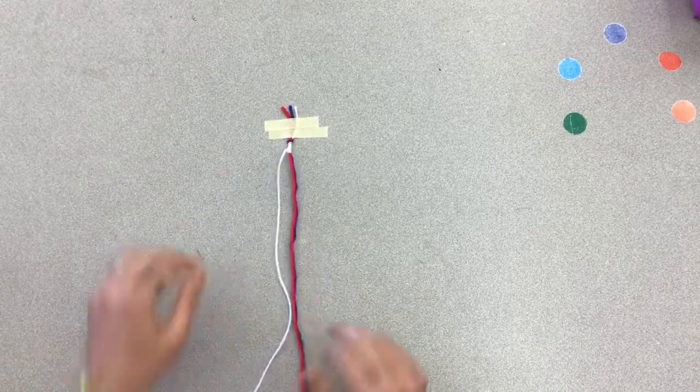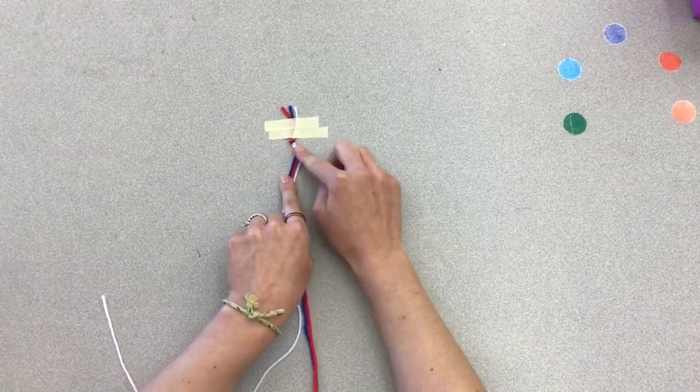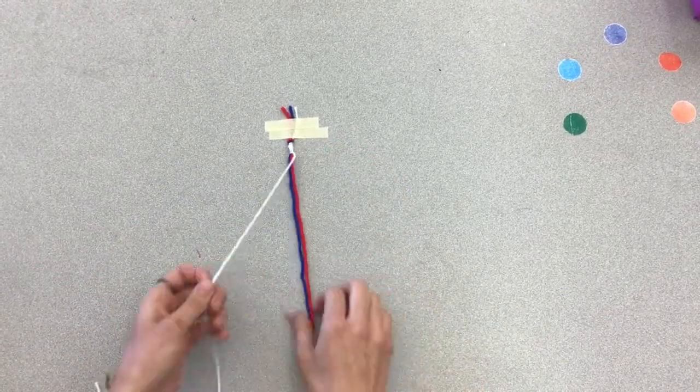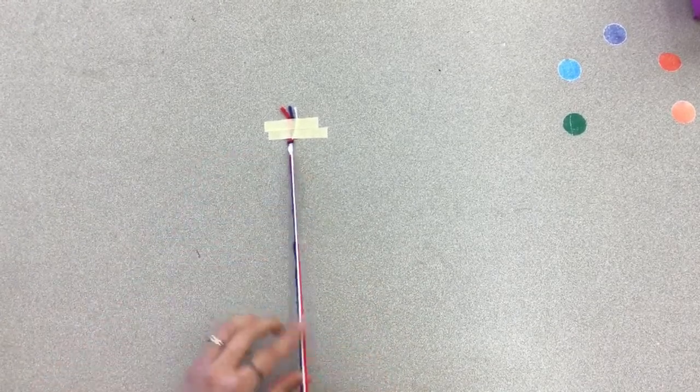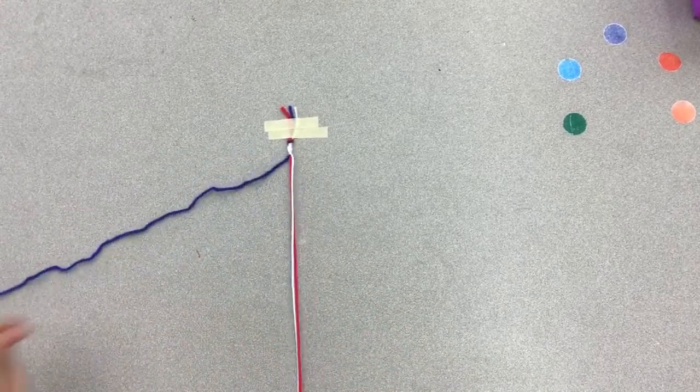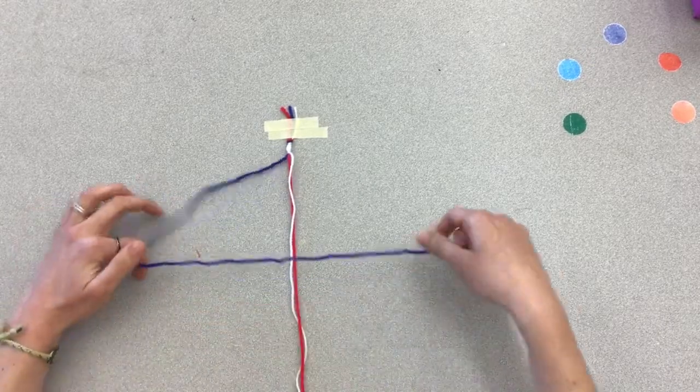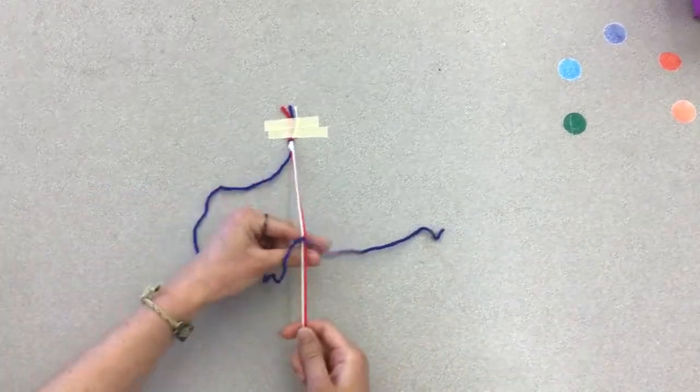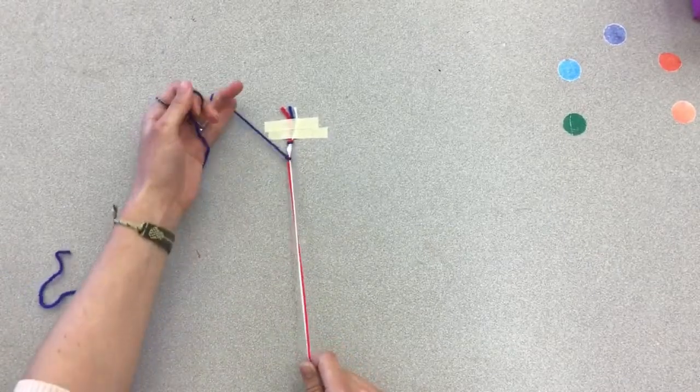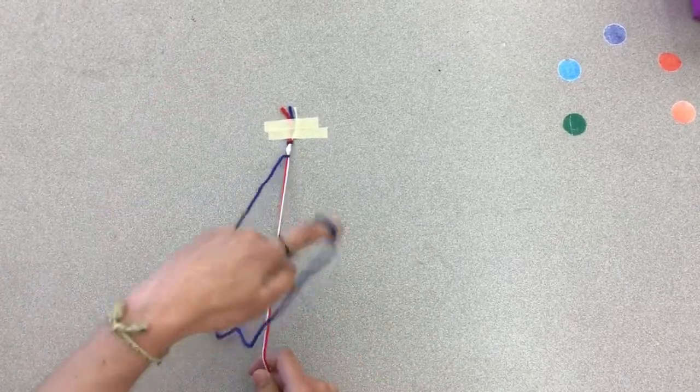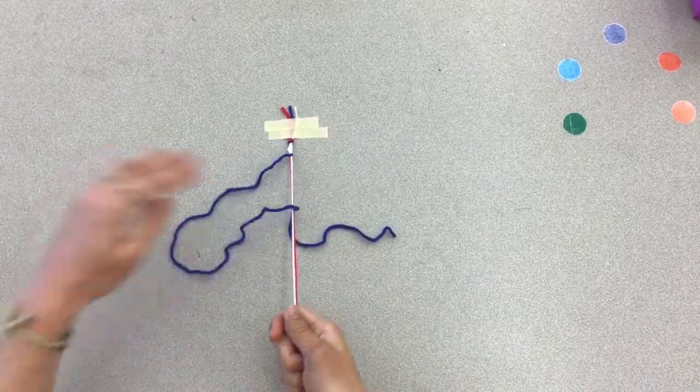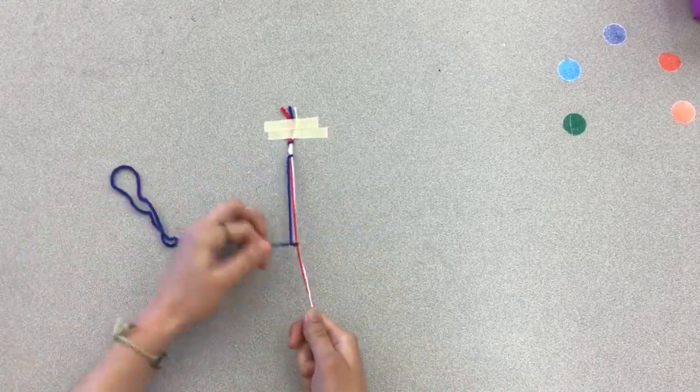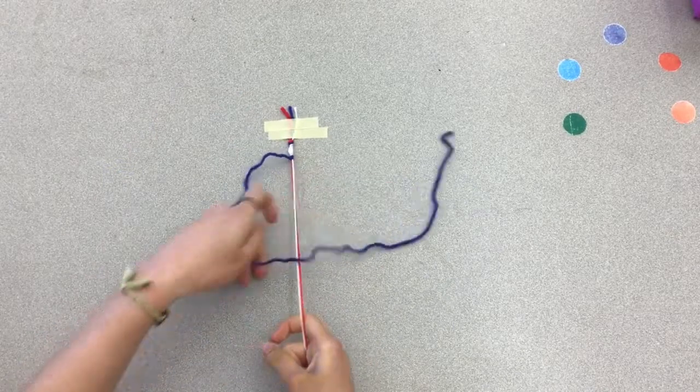When you want to change colors you can kind of see that mine have started to build up here. When you want to change colors just put the one you're using next to one of the other strings that were straight and pull a different color out to make your number four with and then continue the same process. You'll notice that I am holding the straight strings in one hand and using my other hand to work the string that's building up on the bracelet.